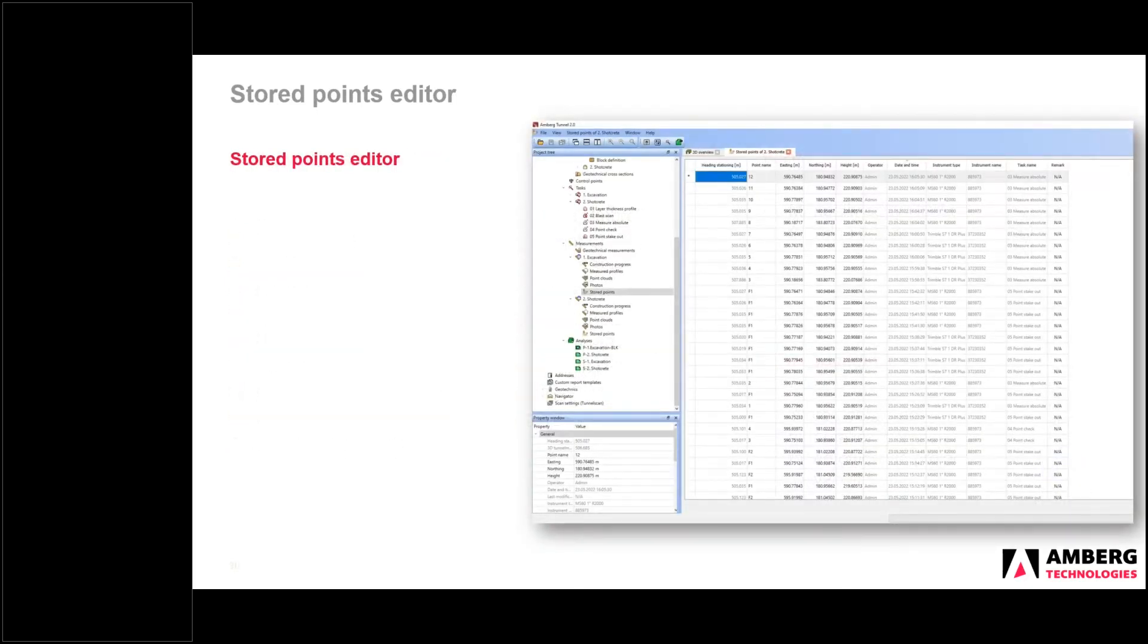In Amberg Tunnel, we now have, this is our first implementation of the stored points editor. The editor is organized in the same manner as the other measurement editors. So, the measured profile editor, the point cloud editor, and the images. It's organized by construction stage. You will have one editor in each construction stage you create and the data that you capture, you will find it in the relevant construction stage. You will see this new node in the project tree. We have a link button. Amberg Tunnel knows which Navigator task definition each point belongs to. You can quickly take a shortcut to that task definition using this button here.